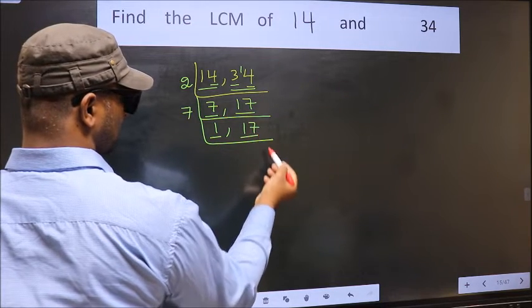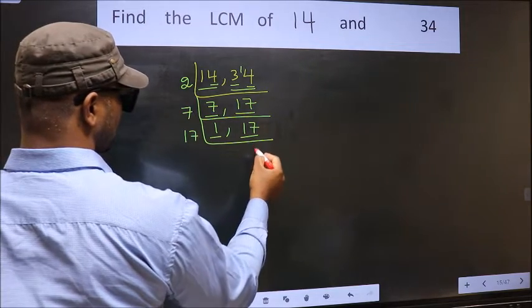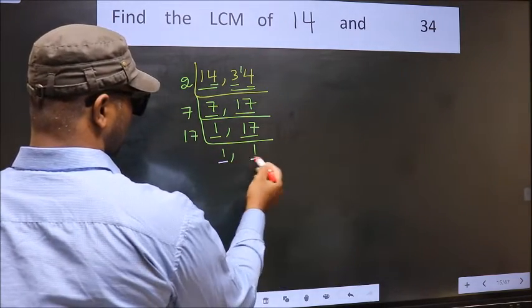So, focus on the other number 17. 17 is a prime number, so 17 1's 17. Now, we got 1 in both places.